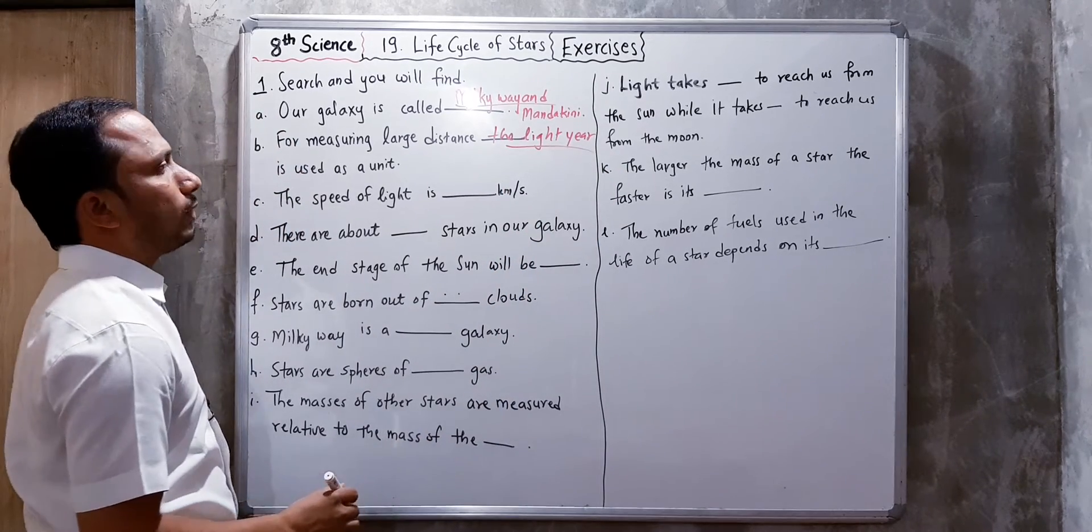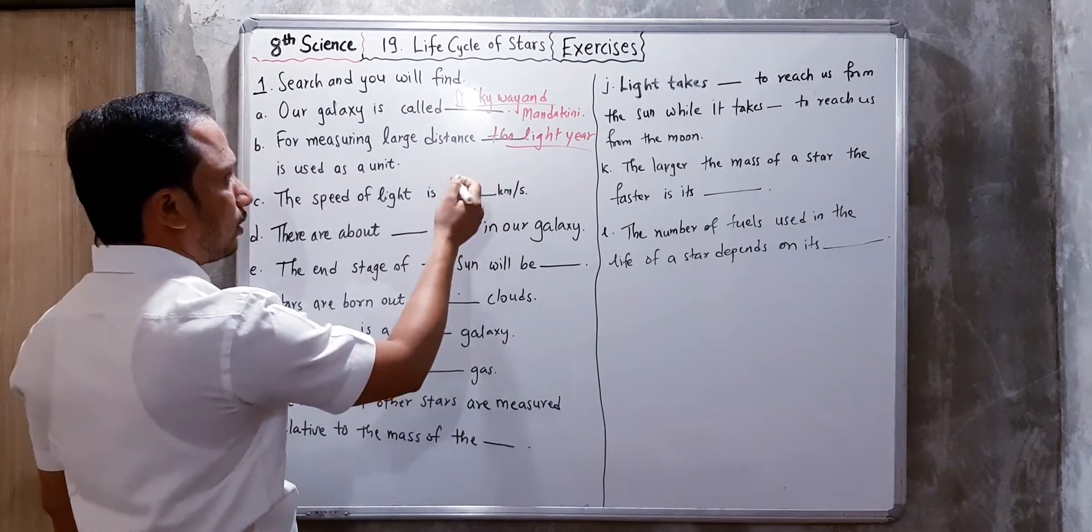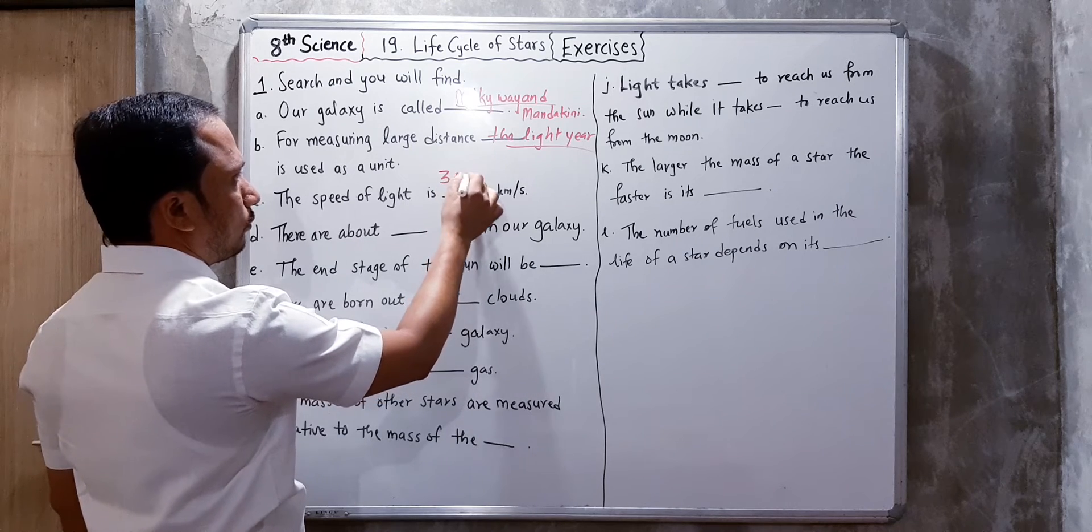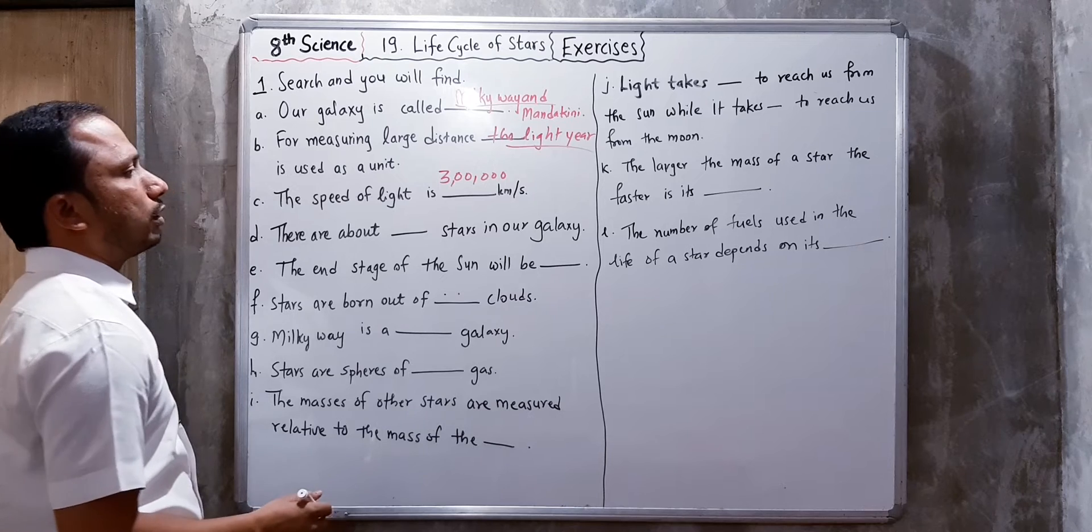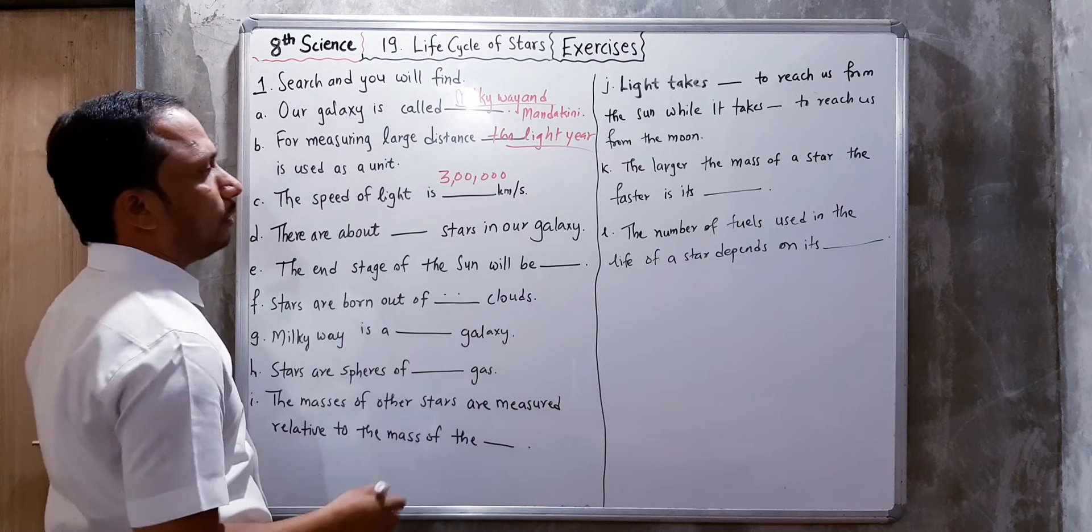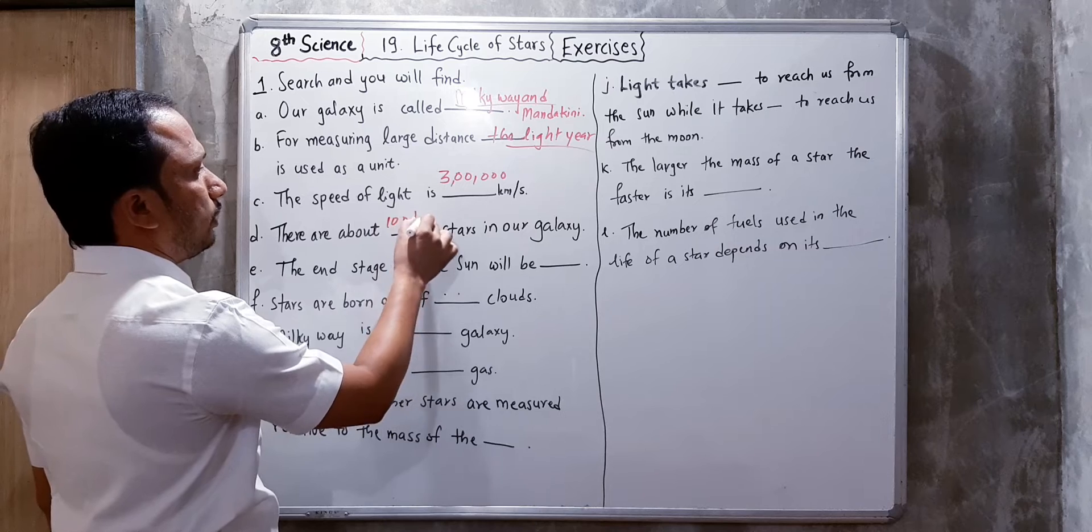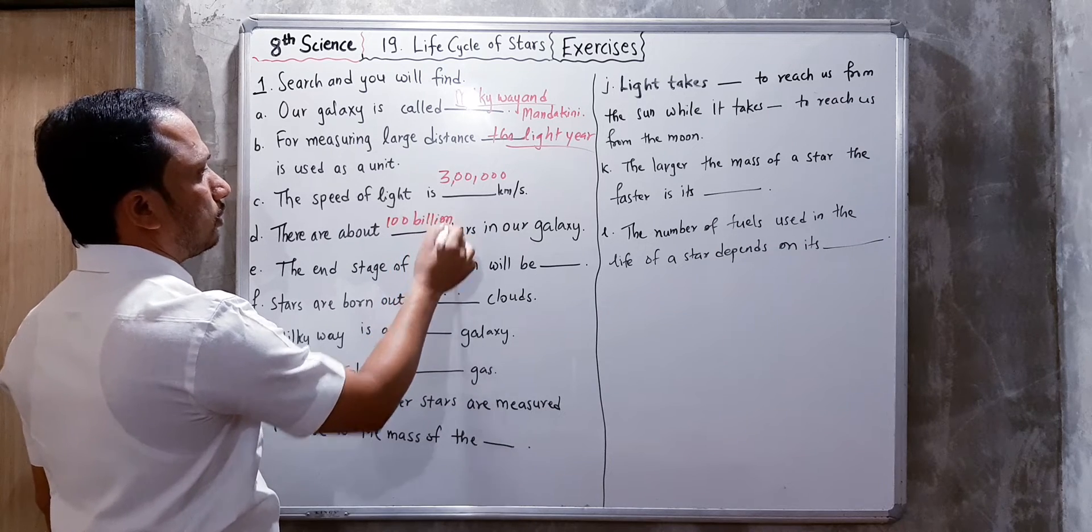The speed of light is three lakh kilometers per second. There are about one hundred billion stars in our galaxy.